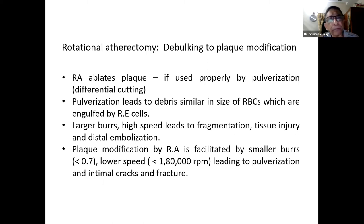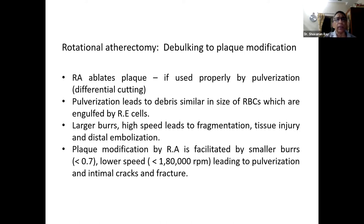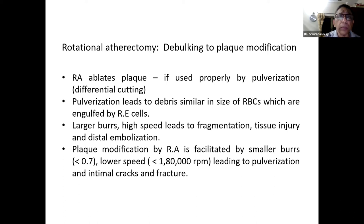If you use larger burrs and high-speed burrs, they can cause fragmentation and tissue split, leading to distal embolization and acute complications. Plaque modification by rotational atherectomy is best facilitated by smaller burrs — when the burr-to-artery ratio is less than 0.7 — lower speeds less than 180,000 RPM, leading to pulverization and intimal cracks or fracture of the calcified block.